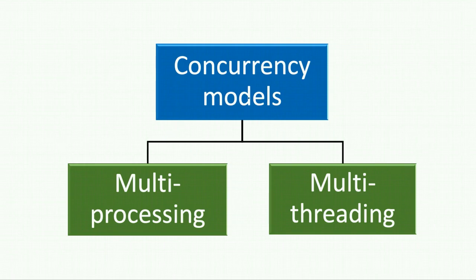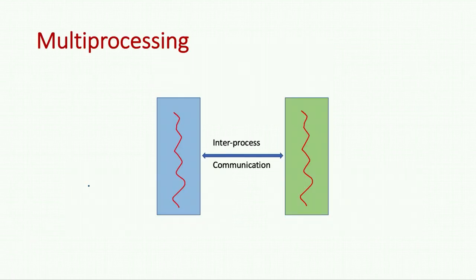Now what are the different concurrency models? One model is multi-processing and the second one is multi-threading. In multi-processing we have multiple processes - this is process P1 and this is process P2. Within each process, just a single thread is running. This process has just one thread running, and this process also has just one thread running.